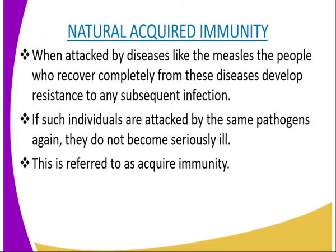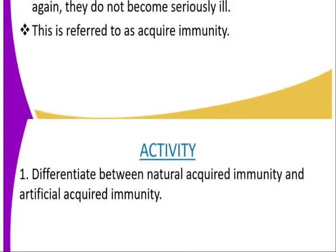During pregnancy, the mother passes antibodies across the placenta to the fetus, which confers immunity against infection for some period of time. At birth, the baby gets antibodies from the mother through breast milk, especially in colostrum. This is natural passive acquired immunity.